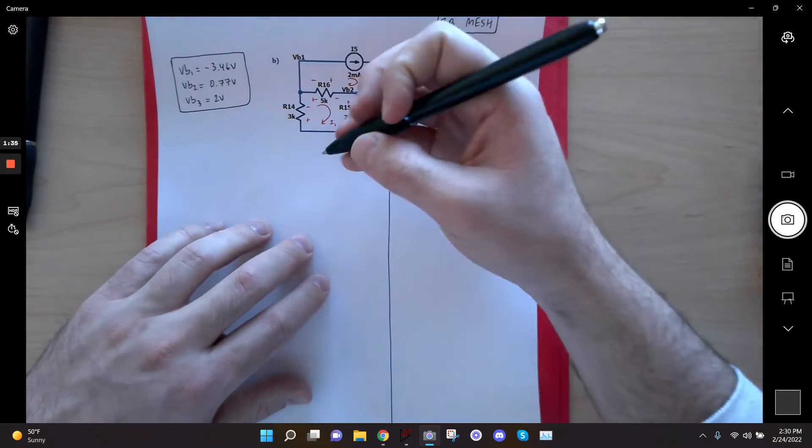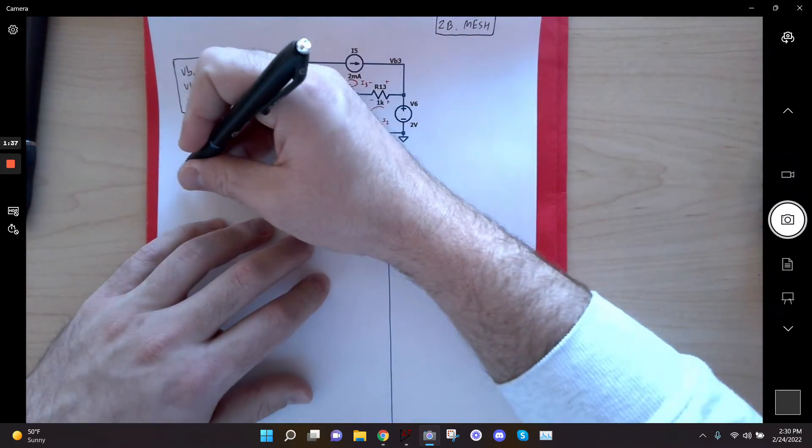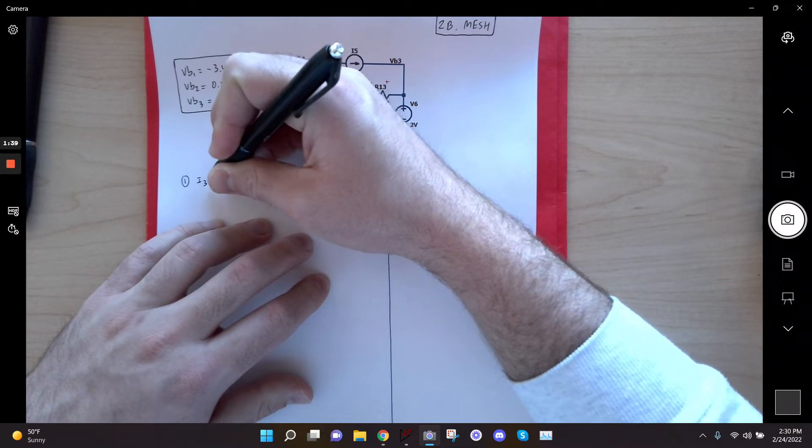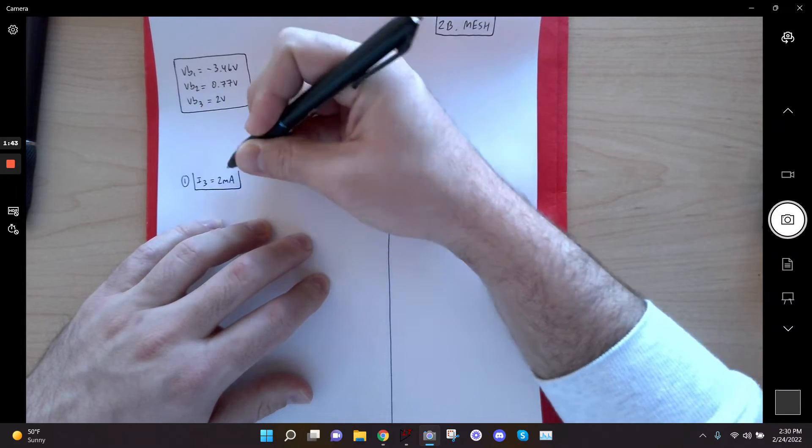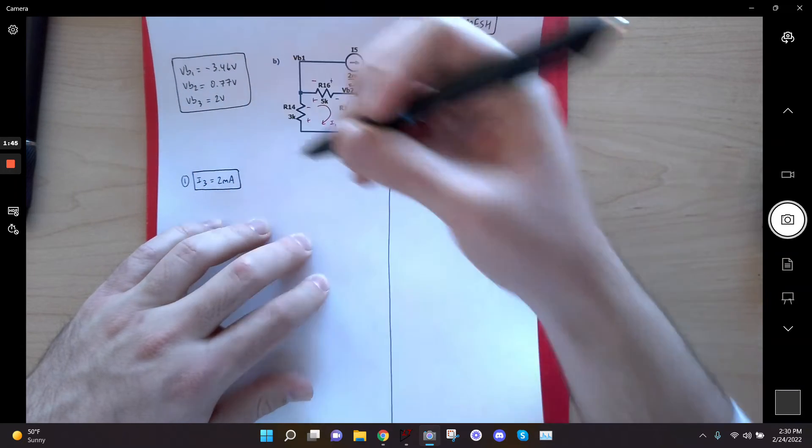Alright, so my first equation is going to be I3 equals 2 milliamps. And that's because, again, I defined I3 in the same direction as my current source that's in that loop.